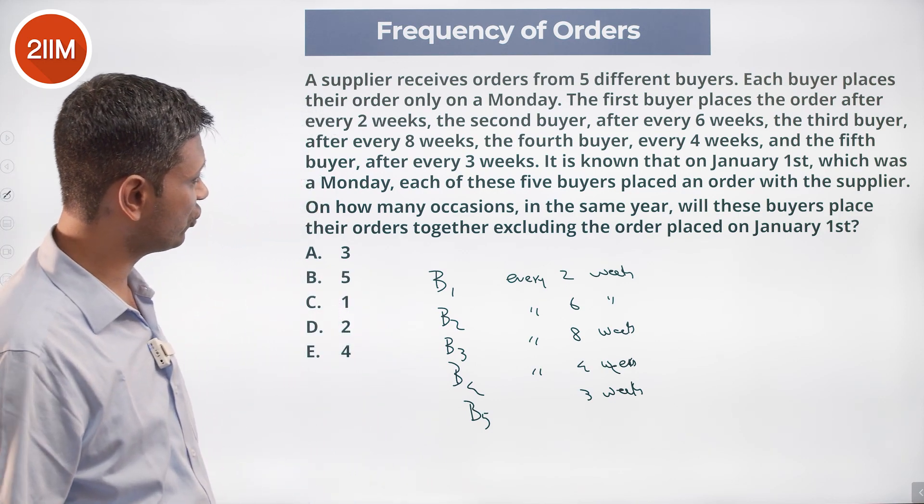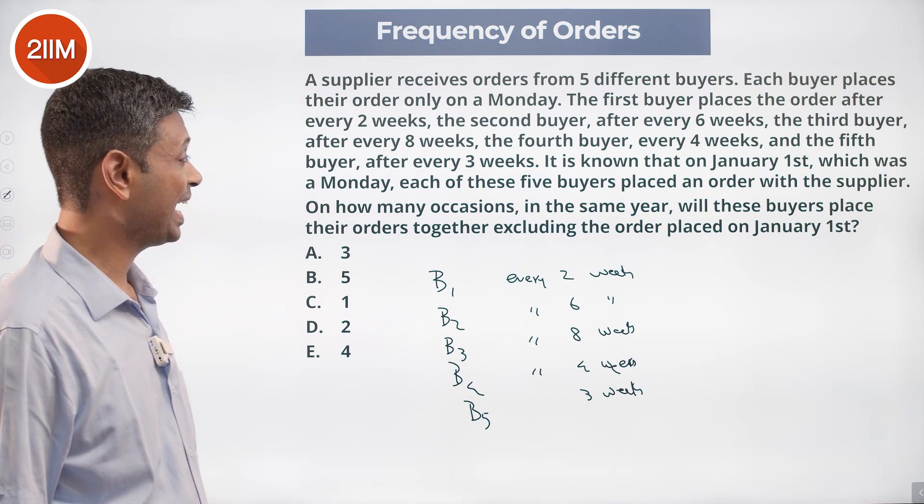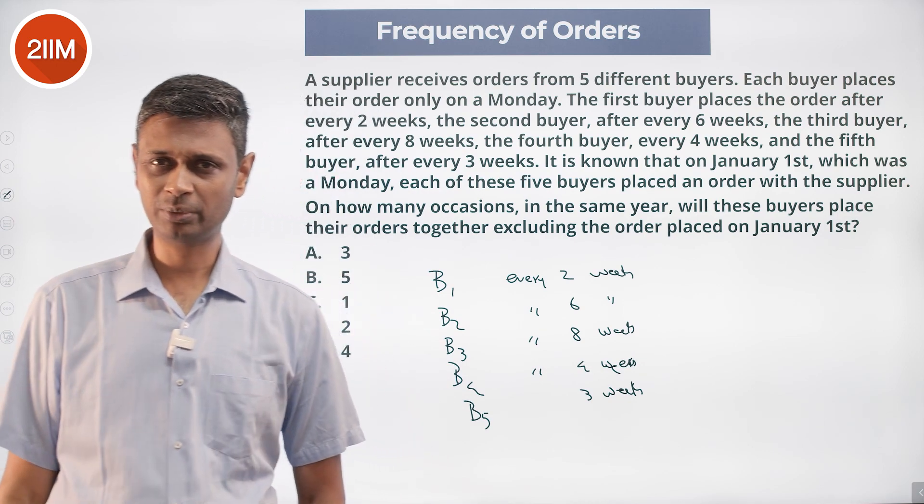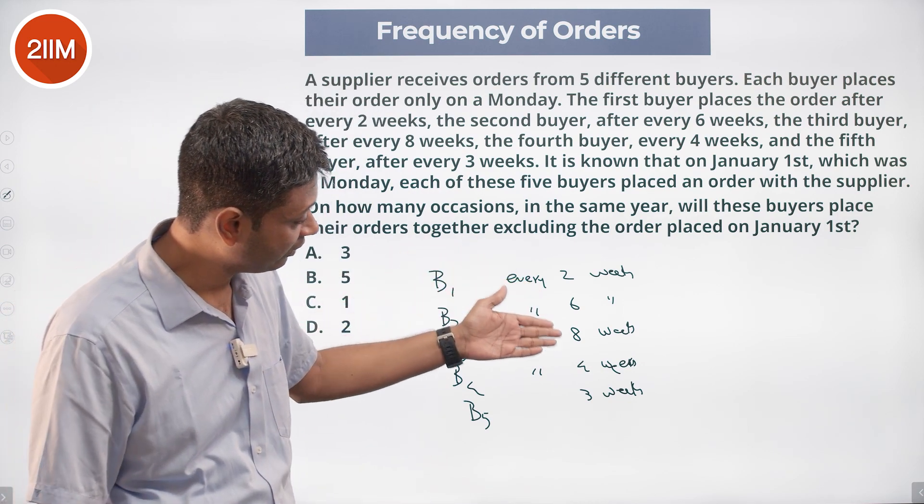On how many occasions in the same year will these buyers place their orders together excluding the order placed on Jan first? Leave out Jan first. When will they do it together? Every two weeks, every six weeks, every eight weeks, every four weeks, every three weeks.